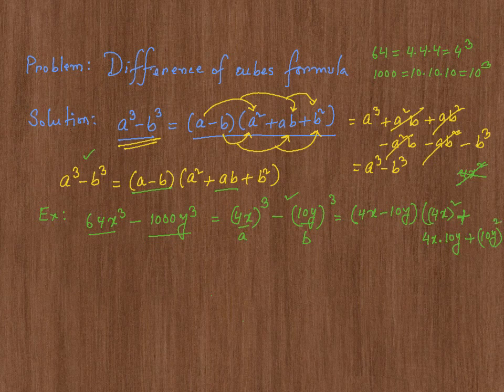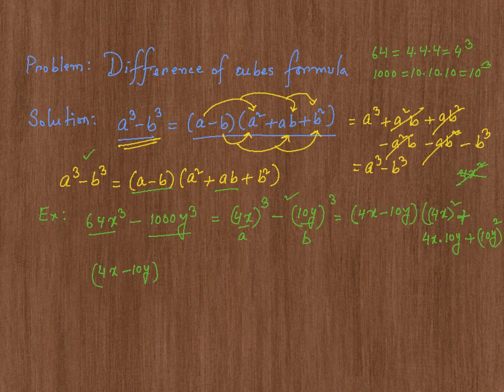Now, if I simplify it, I get 4x minus 10y, which is just this. Then 4x whole square is 16 x square.